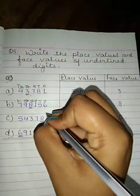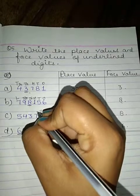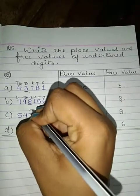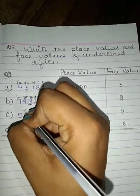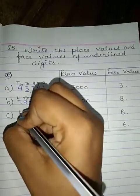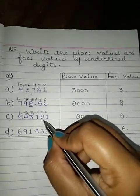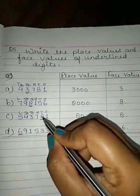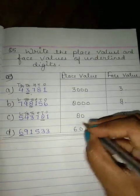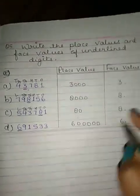In the next part, place values are: ones, tens, hundreds, thousands, ten-thousands, and lakh. The digit 8 is at the tens place, so its place value is 80 and its face value is 8.